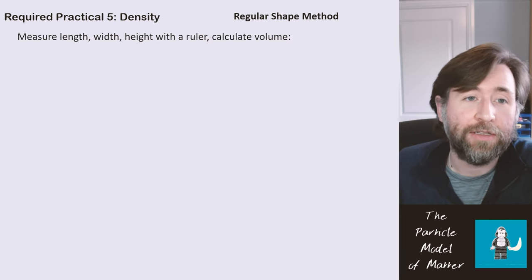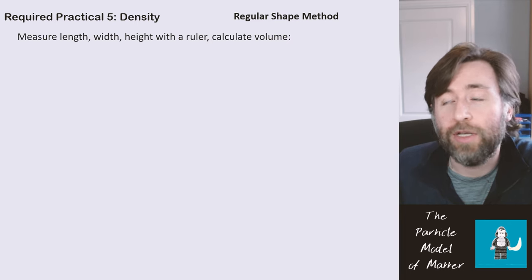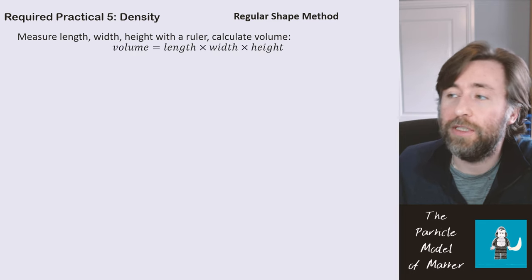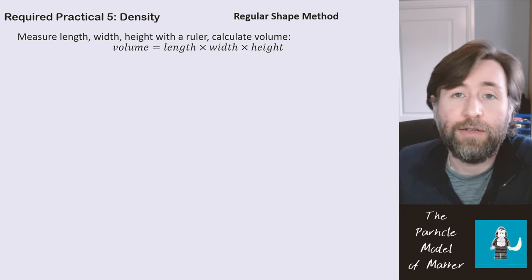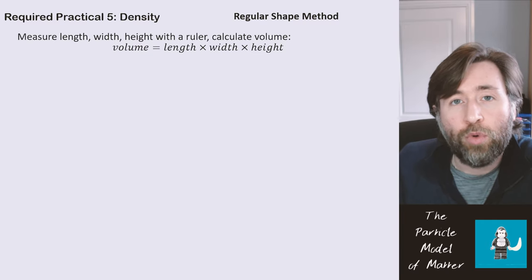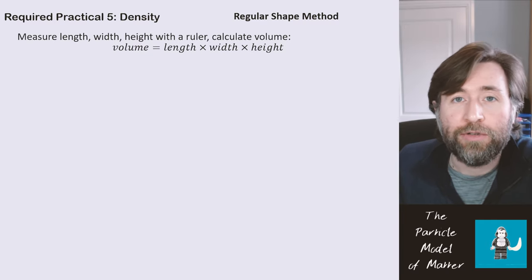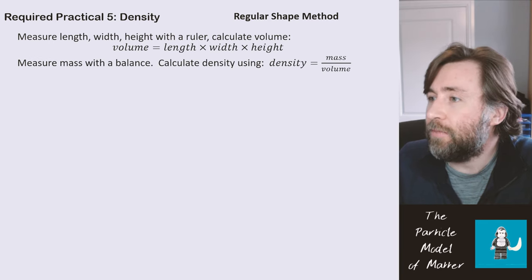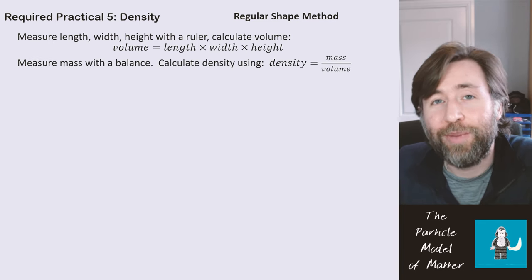If you have a regular shape, then you can measure the length, the width, and the height with a ruler, and you can calculate the volume using the equation volume equals length times width times height. Remember, whenever you're describing a method to state what you're measuring, what you're going to measure it with, and what you're going to use it for.